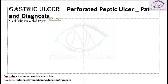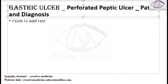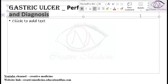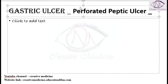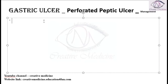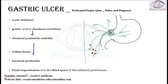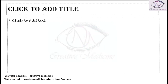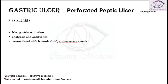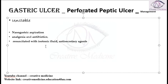So whenever there is a perforated peptic ulcer, one important thing is the patient will be unstable. You should first do nasogastric aspiration. Analgesia is given to the patient because the patient will have pain, and because there is an increased risk of bacterial peritonitis in peptic ulcer perforation, we have to give antibiotics. The patient is also resuscitated with isotonic fluids and anti-secretory agents.